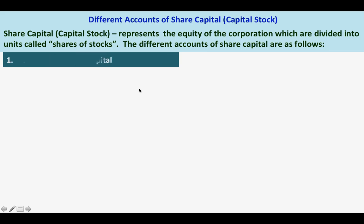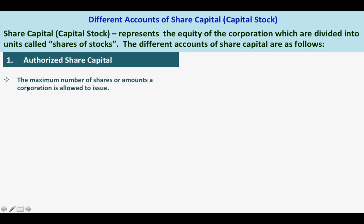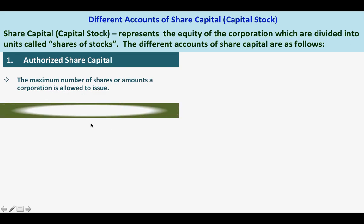The first one is authorized share capital. Authorized share capital is the maximum number of shares or amount a corporation is allowed to issue.